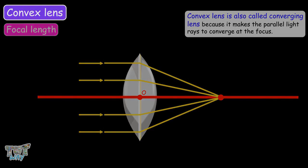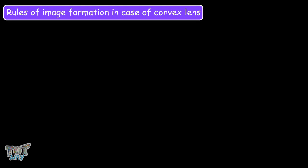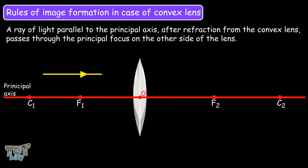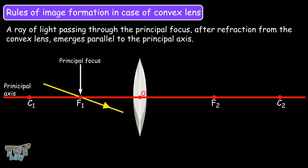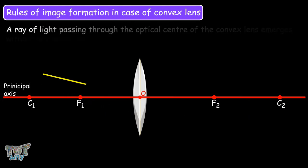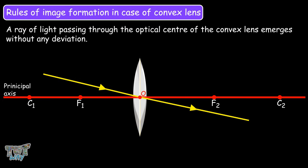We also learnt the rules for determining image formation in the case of a convex lens. A ray of light parallel to the principal axis, after refraction from the convex lens, passes through the principal focus on the other side of the lens. A ray of light passing through the principal focus after refraction emerges parallel to the principal axis. A ray of light passing through the optical center emerges without any deviation.